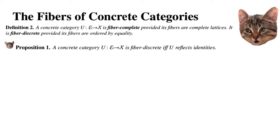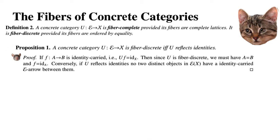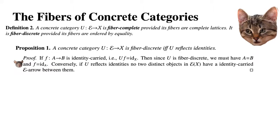We have the following result: a concrete category U: E → X is fiber-discrete if and only if U reflects identities. The proof is that if we have an arrow F: A → B which is identity-carried — i.e., UF equals the identity for some X — then since U is fiber-discrete, we must have A equal to B and F equal to the identity on A. Conversely, if U reflects identities, no two distinct objects in the fiber have an identity-carried E-arrow between them.